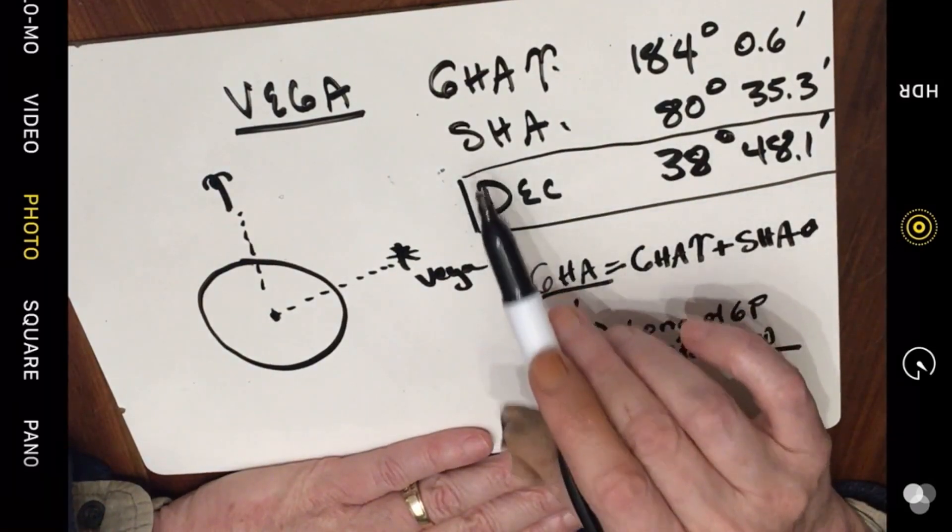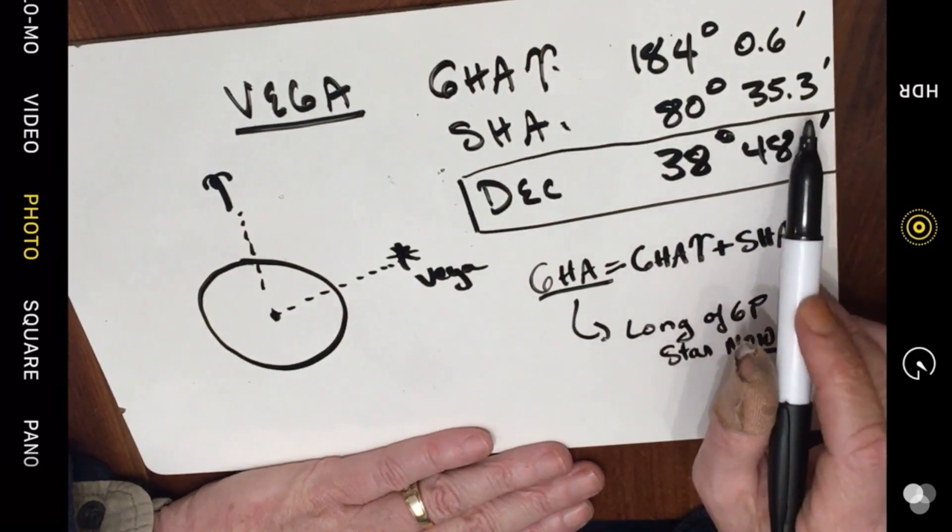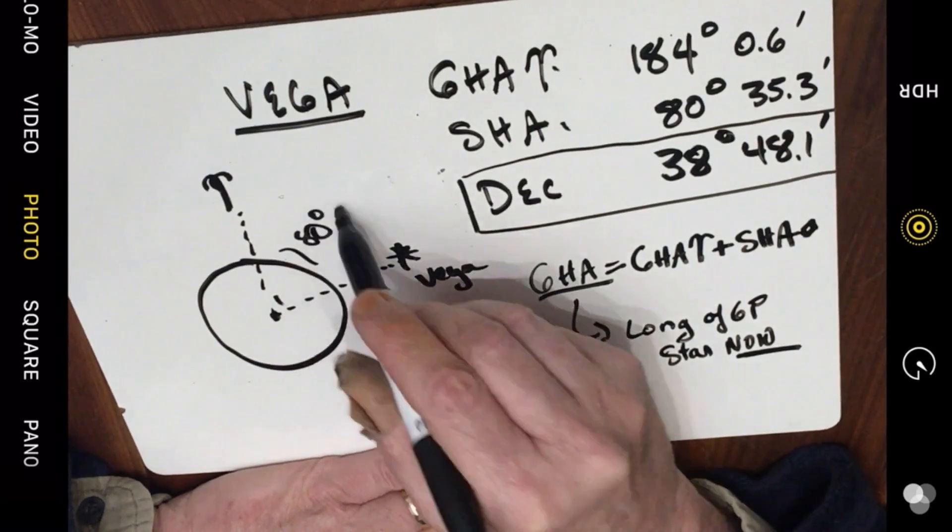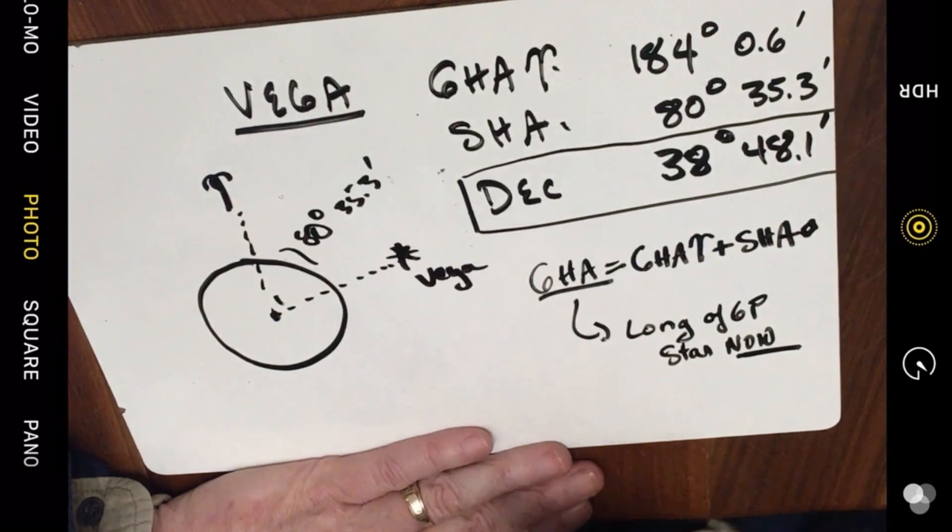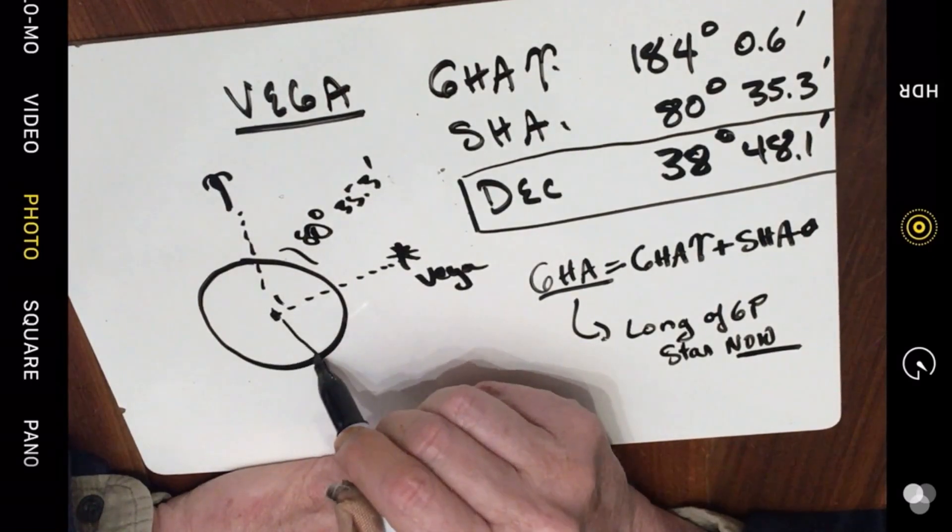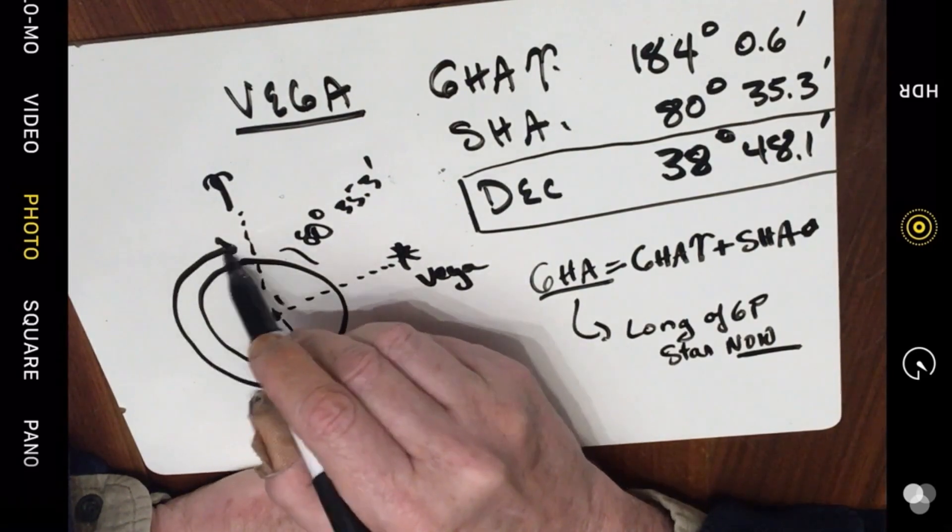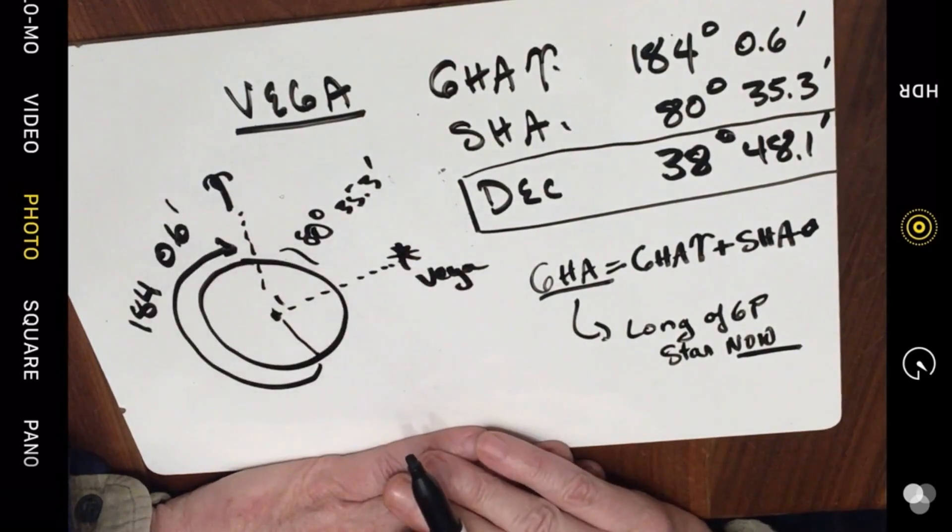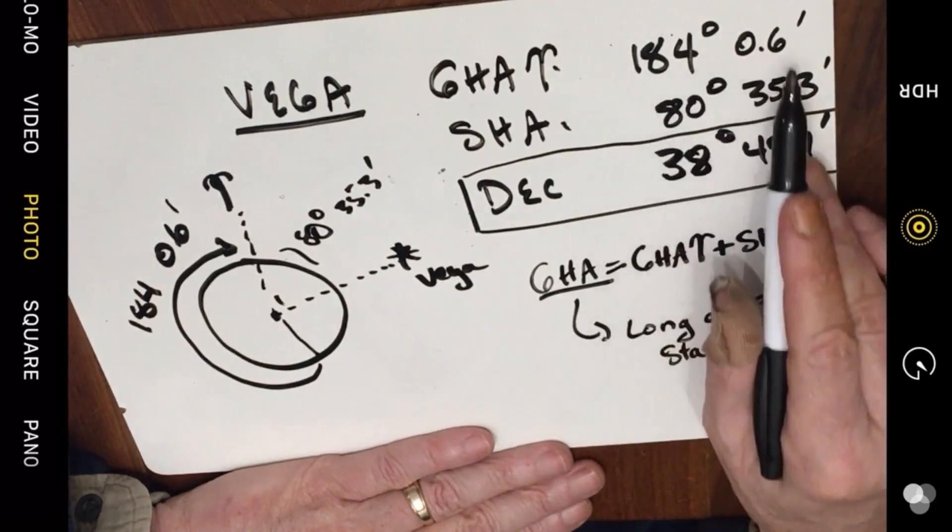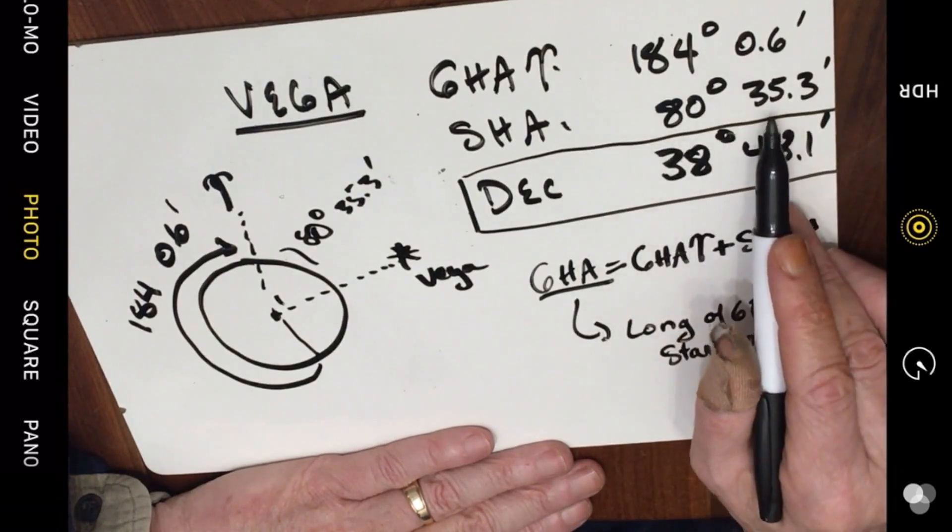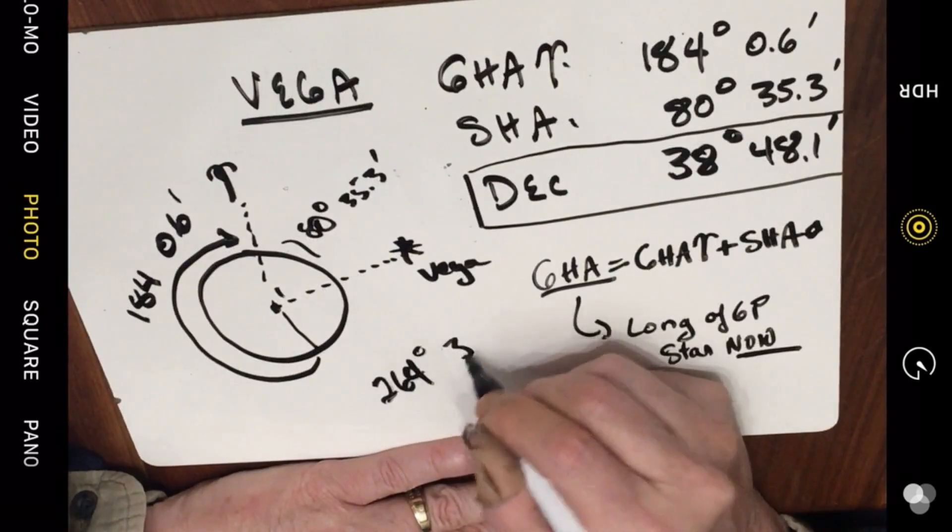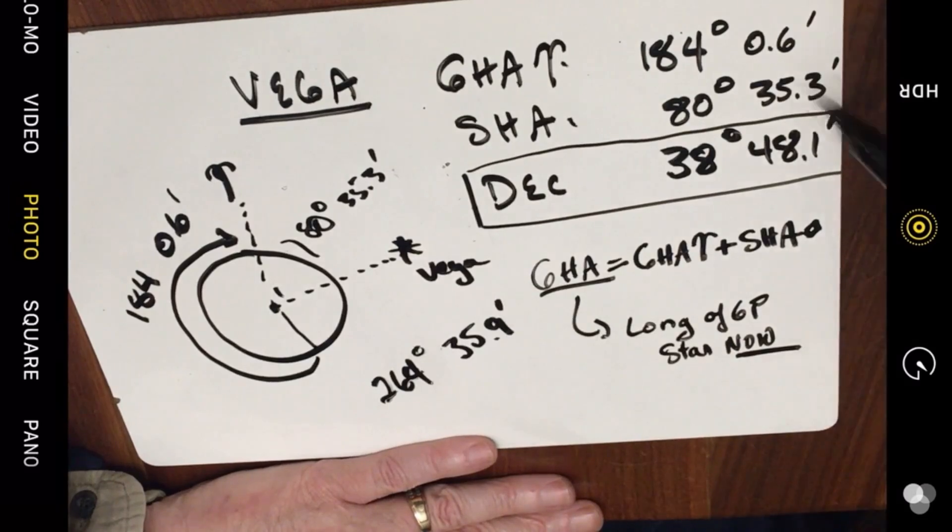Now the sidereal hour angle of Vega is 80 degrees 35.3 minutes. So if you look at Aries down to the center of the earth out to Vega, this is going to be 80 degrees 35.3 minutes. Now the next thing that we have to figure out, where is the Greenwich prime meridian in relationship to Vega? Well as it turns out, the Greenwich prime meridian is over here, and this is 184 degrees 0.6 minutes. So what is the Greenwich hour angle of the star Vega? Well it's 184.06 plus 80 35.3. So if we add those together, we'll get 264 degrees and we're going to get 35.9 minutes. Because what we do is we add this to this.